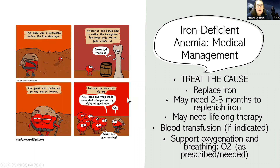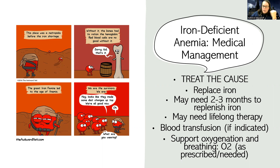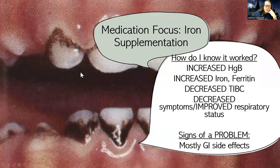So what do we do medically to manage this? We treat the cause — if there's a reversible cause, we try to treat that. They're not just low on blood cells; they're also low on iron, so we need to replace iron. It's good to know that some people might only need two or three months to replenish the iron, but it does take time. Some patients need lifelong therapy, especially if they have absorption issues. If their anemia gets severe enough, they may need a blood transfusion — remember we usually only transfuse for hemoglobin less than seven. We're also going to support their oxygenation and breathing, giving O2 as prescribed.